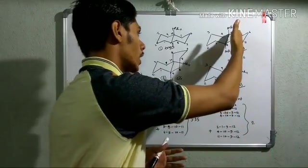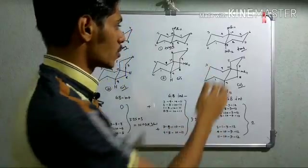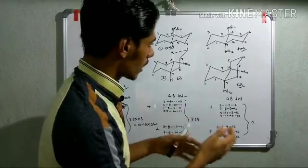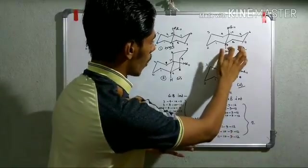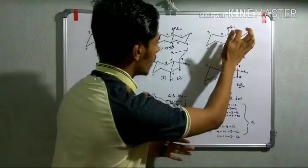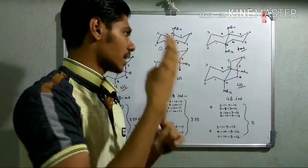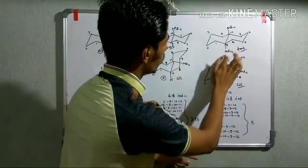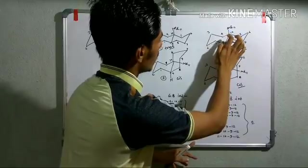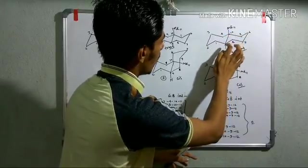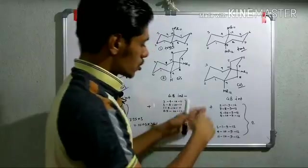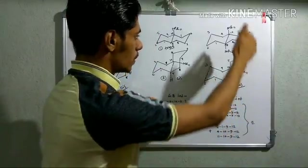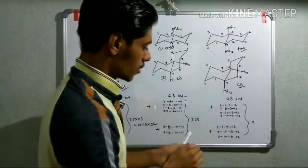Now a more interesting case happens when you have two methyl substituents at the 9 and 10 positions. If you count the gauche-butane interactions, when you add an extra methyl to the trans isomer it again encounters another four gauche-butane interactions: 2-1-9-12, 7-8-9-12, 4-10-9-12, and 5-10-9-12. So overall eight gauche-butane interactions are there in the trans isomer.